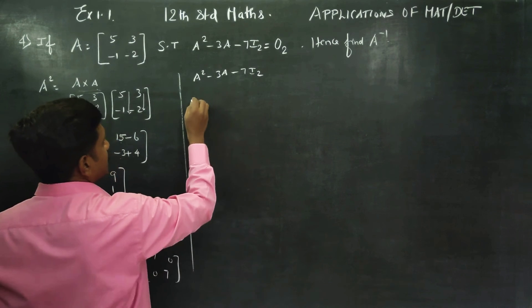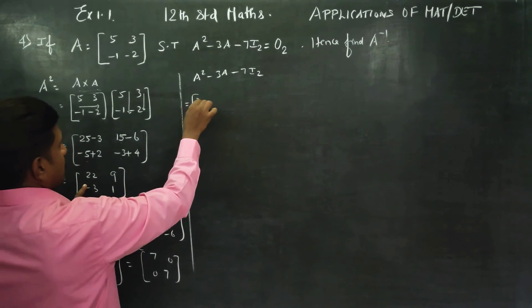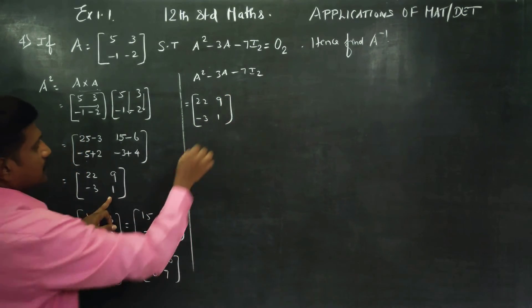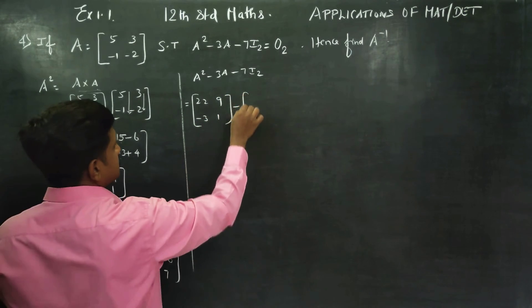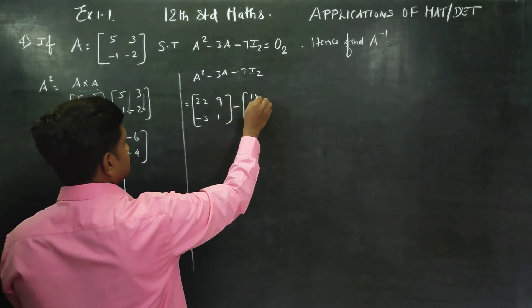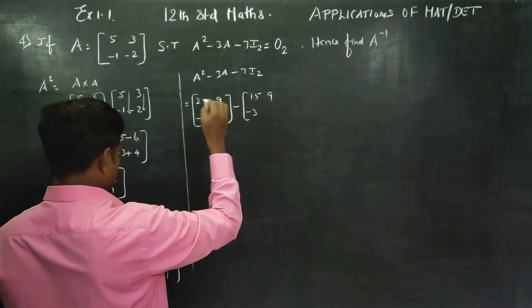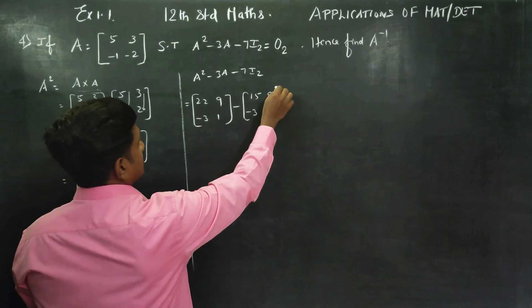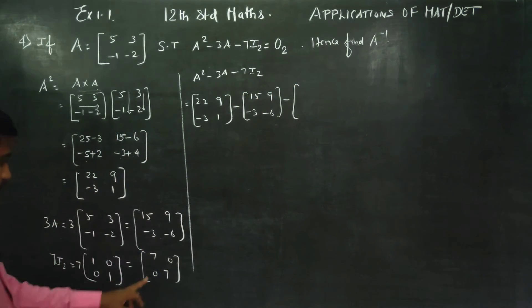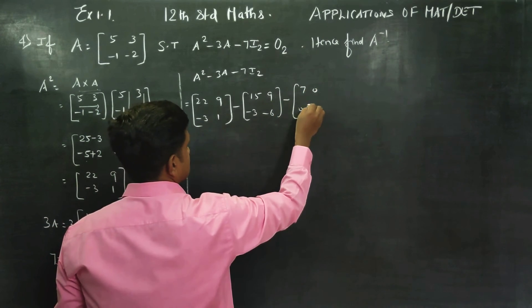Everything is ready. Now let's start A² - 3A - 7I₂. A² answer is [22, 9; -3, 1], minus 3A gives [-15, -9; 3, 6], minus 7I₂ gives [-7, 0; 0, -7].